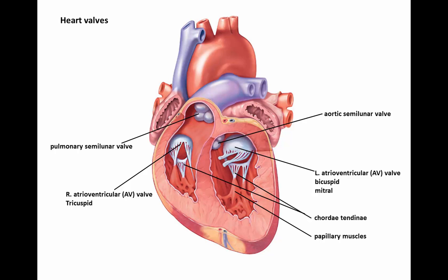The left AV valve can also be referred to by a third name: the mitral valve. The chordae tendinae are string-like structures that attach to the AV valves. They are pulled on by the papillary muscles when the ventricles contract, thus functioning to prevent backflow of blood into the atria. The semilunar valves prevent the backflow of blood in the great arteries.